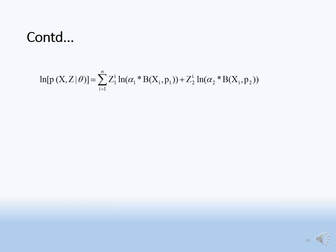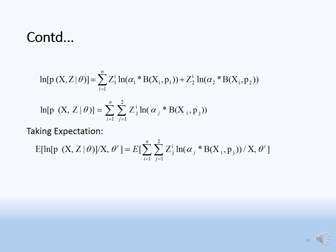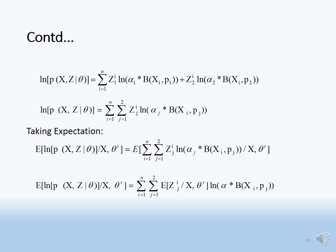This expression is compacted by introducing a summation over j from 1 to 2 of z_ji. Taking the expectation of both sides — that is, the expectation of log P(x, z given theta) given x and theta_t, where theta_t is the current model parameter — we remove the expectation inside the summation, giving expectation of z_ji given x and theta_t.